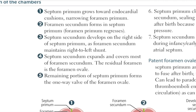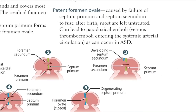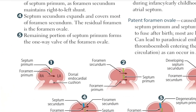Now let's talk about the third step — the septum secundum. Till now we had learned about the septum primum, foramen primum and foramen secundum. In the third step, the septum secundum is formed on the right side of the septum primum, as the foramen secundum maintains the right-to-left shunt. In this diagram, the blue color represents the septum secundum, and the shunt is the foramen secundum. These are the first three steps.